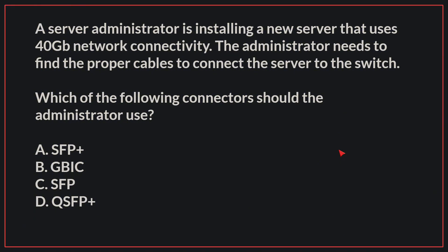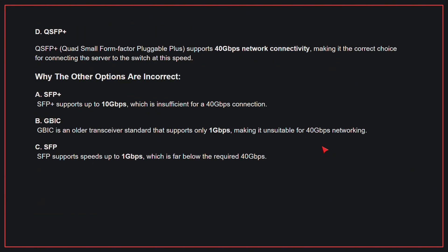A server administrator is installing a new server that uses 40 GB network connectivity. The administrator needs to find the proper cables to connect the server to the switch. The correct answer is D, QSFP+. QSFP+ supports 40 GB per second network connectivity, making it the correct choice for connecting the server to the switch at this speed. A, SFP+: SFP+ supports up to 10 GB per second, which is insufficient for a 40 GB per second connection.